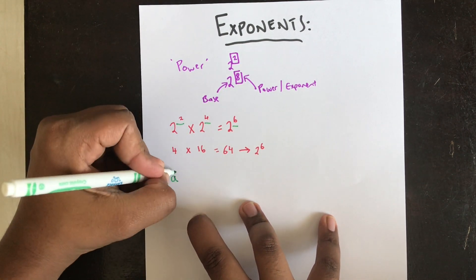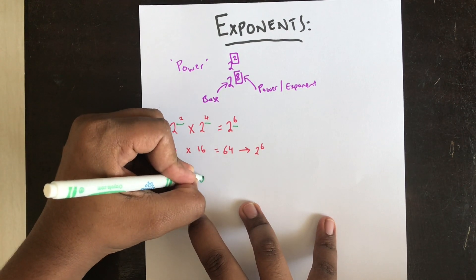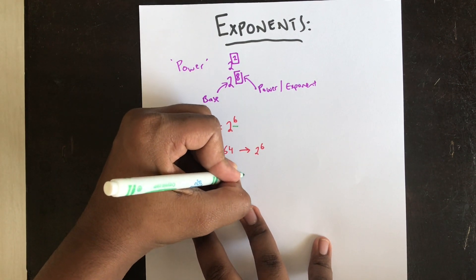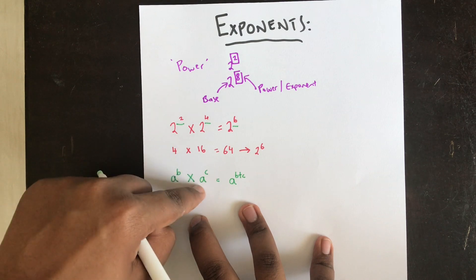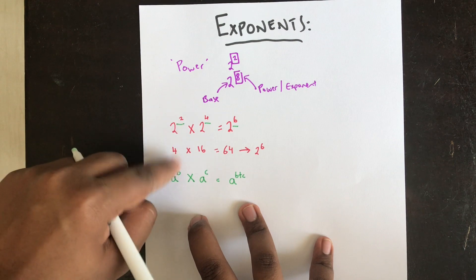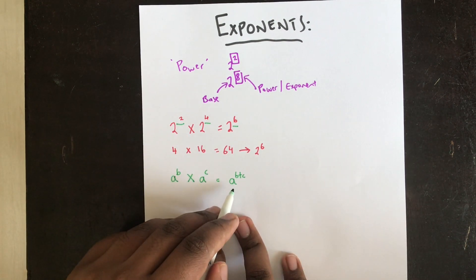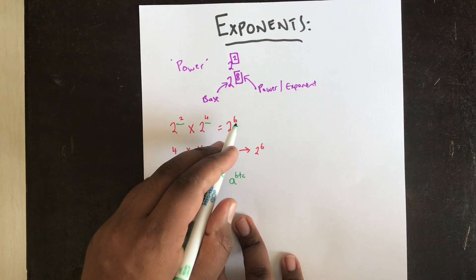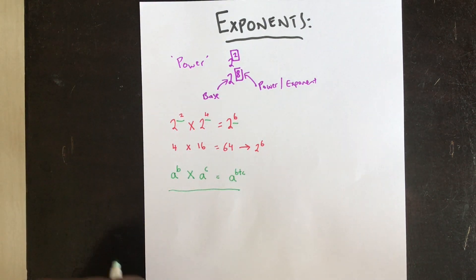Therefore, one rule for exponents: if you have a power b times a power c — where a is the base — your answer is a power b plus c. In this case, a is 2, b is 2, and c is 4, so the answer is 2 power 2 plus 4, which is 2 power 6. This is one rule you should remember.